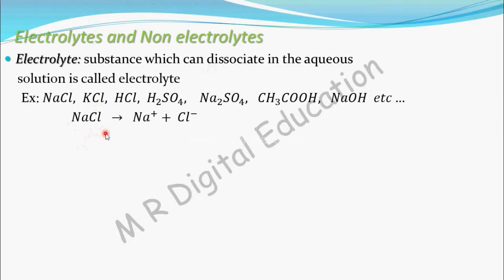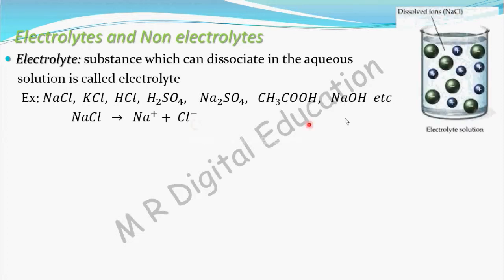NaCl is an electrolyte. As soon as you put it into the water, it will split into Na⁺ and Cl⁻. This positive sign indicates Na⁺ and the negative sign indicates Cl⁻. So it will dissociate in the aqueous solution — aqueous means water. In water, this NaCl will get dissociated.